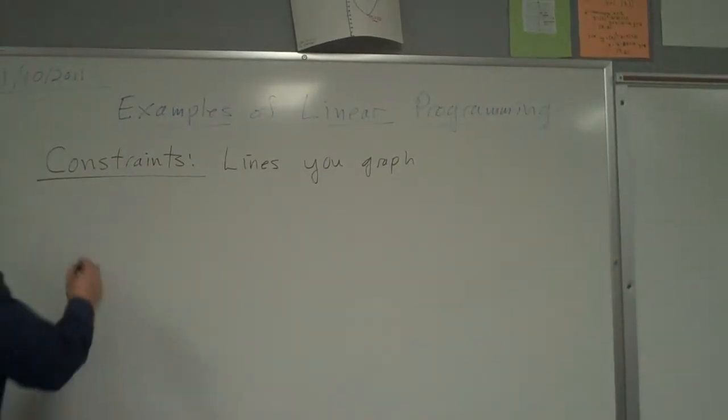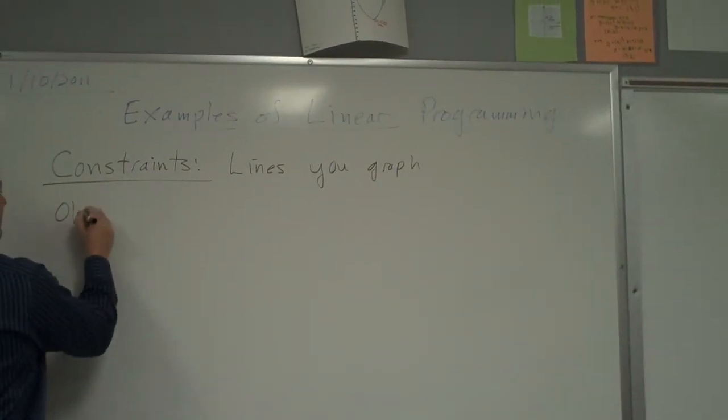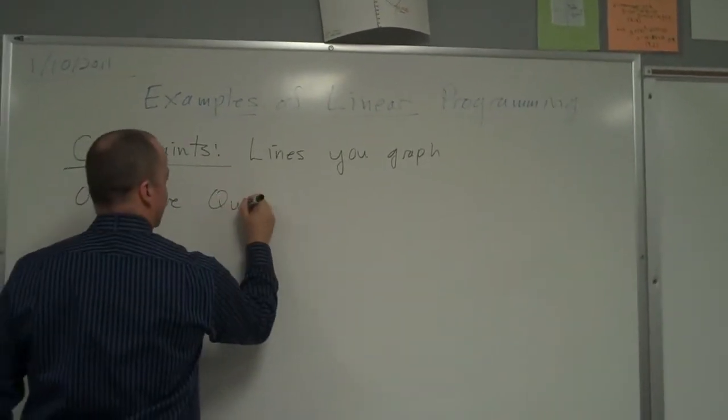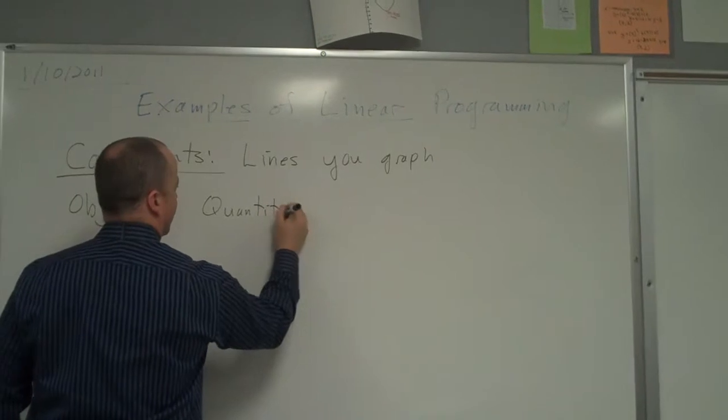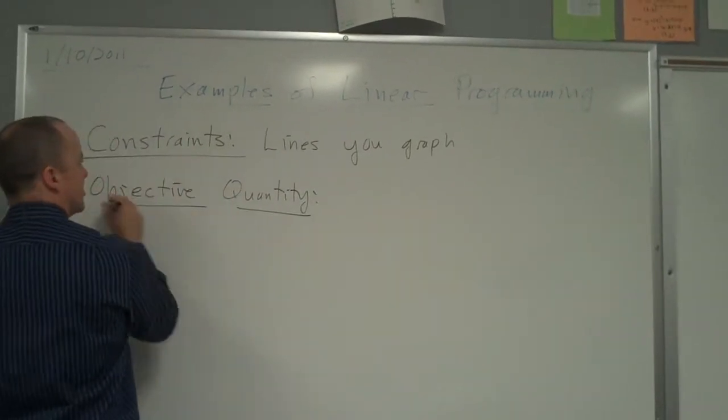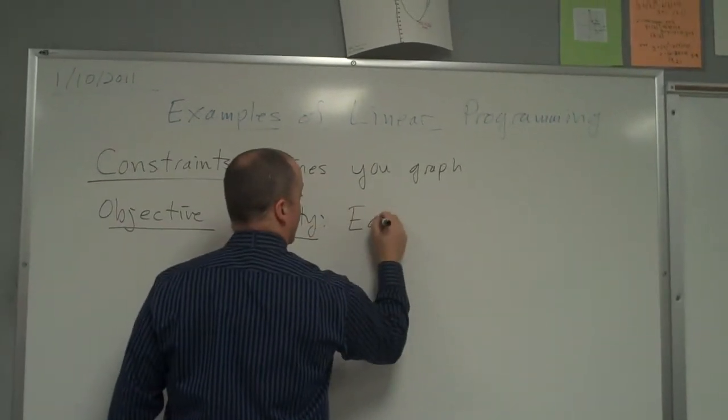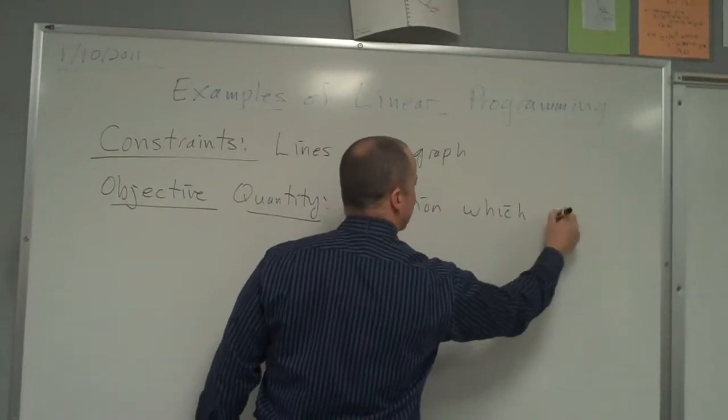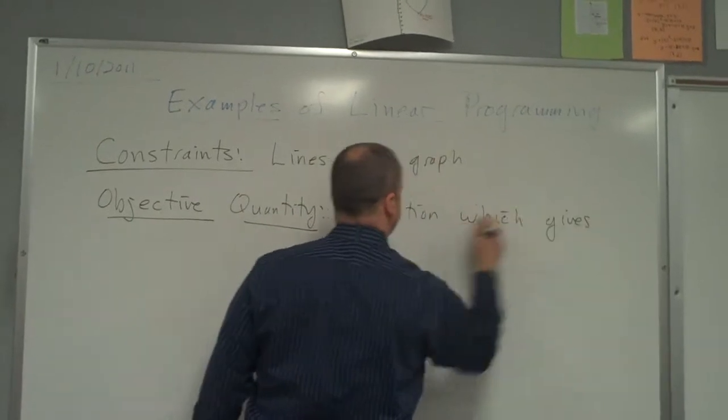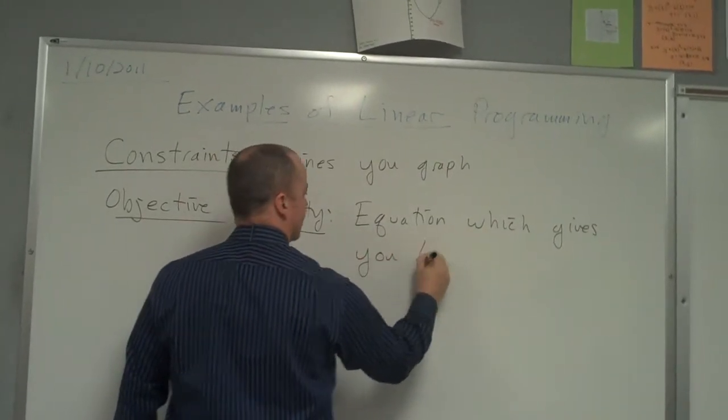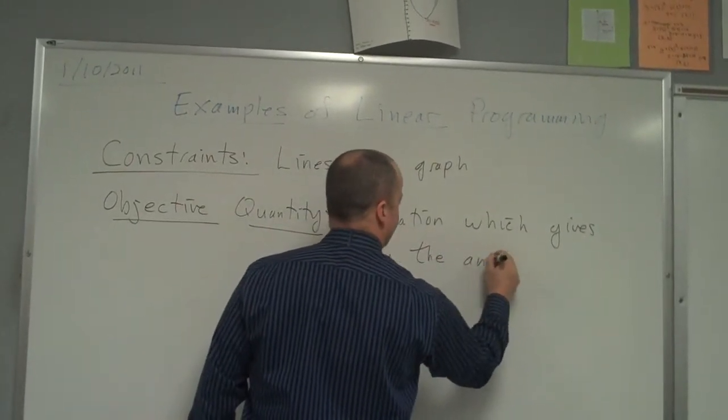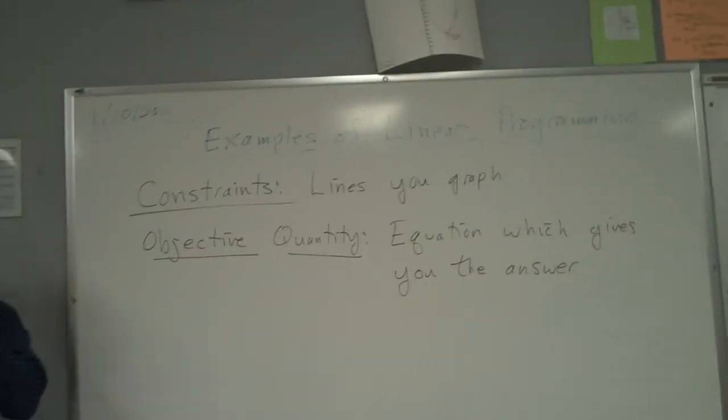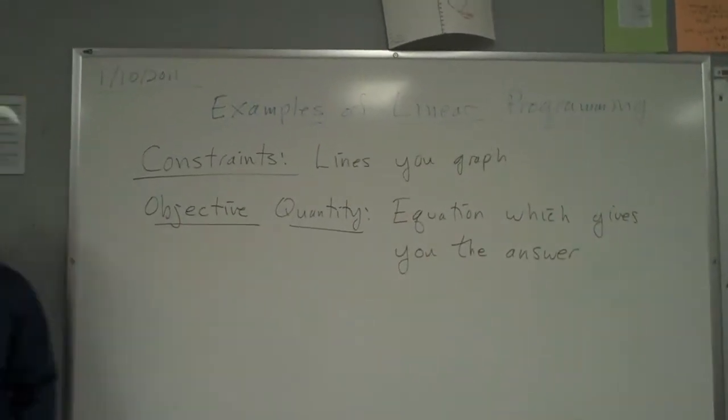You're also going to get something called an objective quantity. And that is going to be the equation which gives you the answer. Constraints are the lines you graph. That's what you've been doing. You've been graphing constraints.